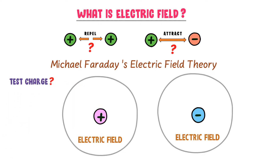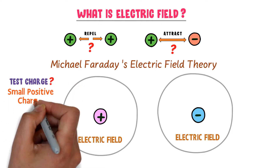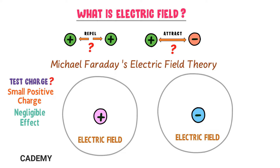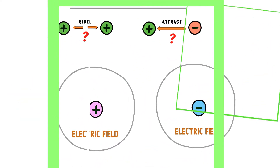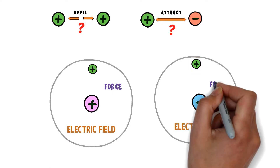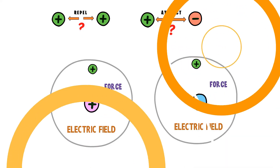Now what is a test charge? A test charge is a small positive charge that has a negligible effect on the electric field of other charges — for instance, it will not distort the electric field of a positive or negative charge. Now let's consider bringing a test charge inside the electric field of the positive charge and negative charge. This test charge experiences the force of the electric field of the positive charge, and also experiences the force of the electric field of the negative charge.